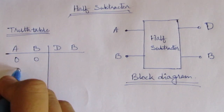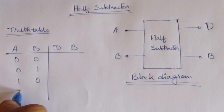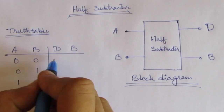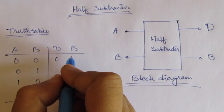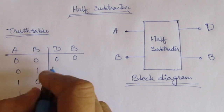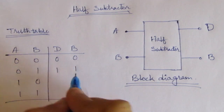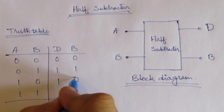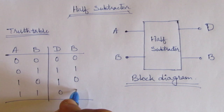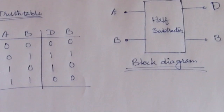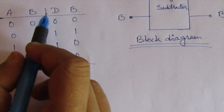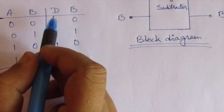The four input combinations are: 0,0 then 0,1 then 1,0 and 1,1. Here we will see the difference and borrow. 0 minus 0: difference is 0 and borrow is 0. 0 minus 1: difference is 1 and borrow is 0. 1 minus 1: difference is 0 and borrow is 0. So, we will try to find expressions for capital D and capital B, that means difference and borrow.